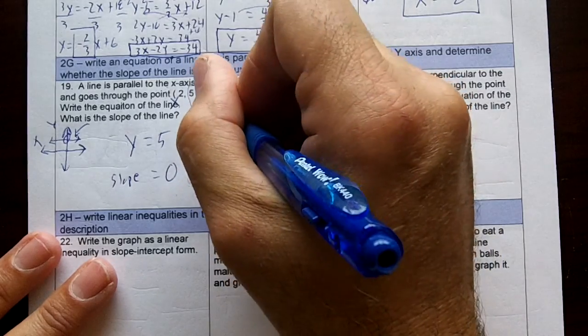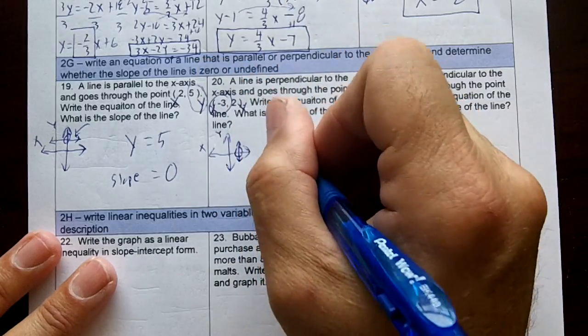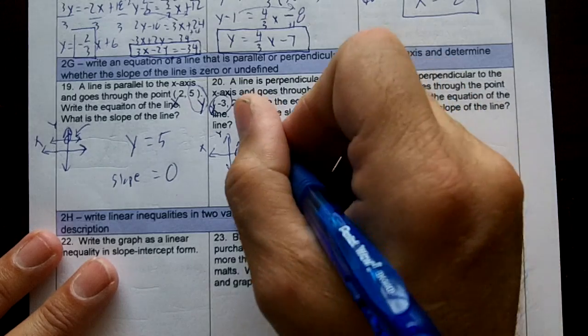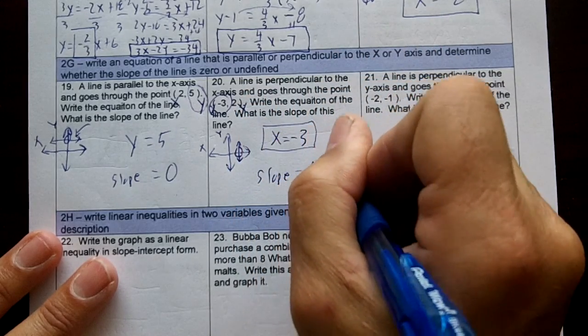It won't cross the y. So this is my x, this is my y. It's going to cross the x-axis at negative 3. If it were to cross the y-axis, it would be y equal 2. The slope of this line is no slope or undefined.